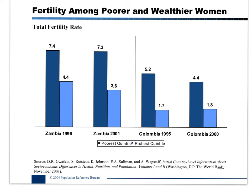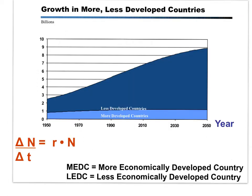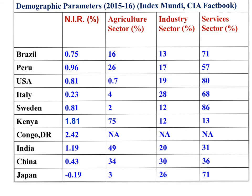Education, access to contraception, and cultural values that support the role of women as equal members of society are important to reducing TFR. Total fertility rates can change over time. Government programs to educate or provide health care or access to contraceptives are important in reducing TFR. The majority of growth in the human population over the last 50 years has been in less economically developed countries, as those countries are in stage 2 of demographic transition. As populations become literate and skilled, economies shift from the agricultural sector toward the service sector — as seen in the U.S., Italy, Sweden, and Japan — and natural increase rates decrease as populations enter stage 3 or stage 4.